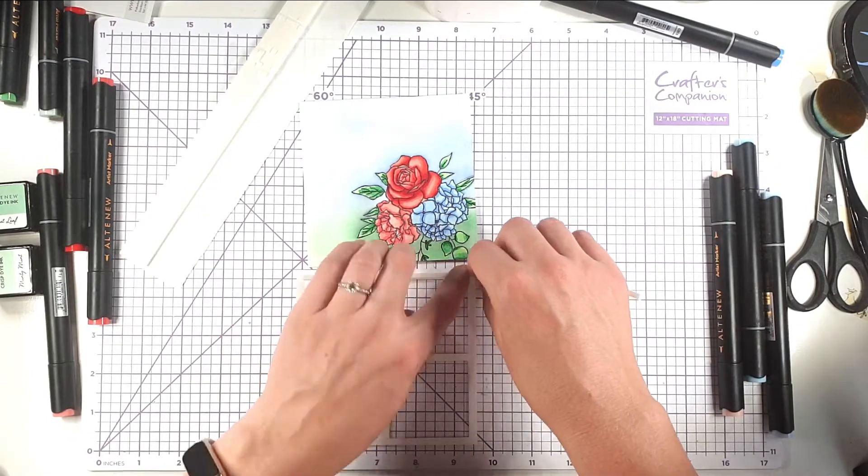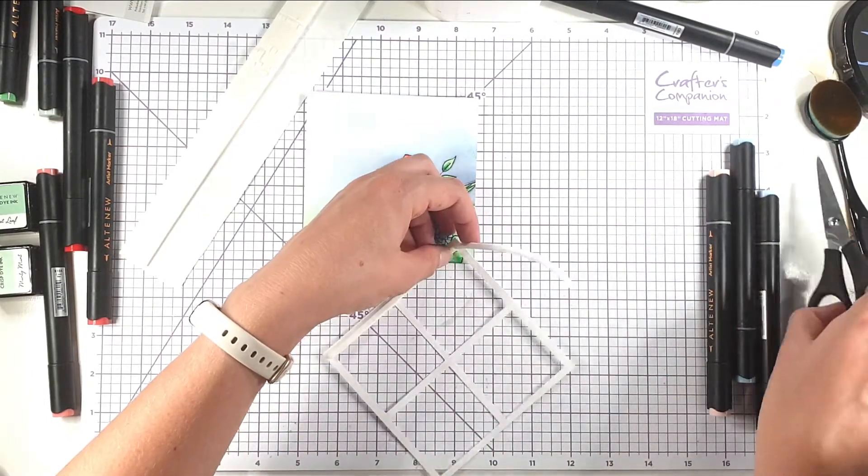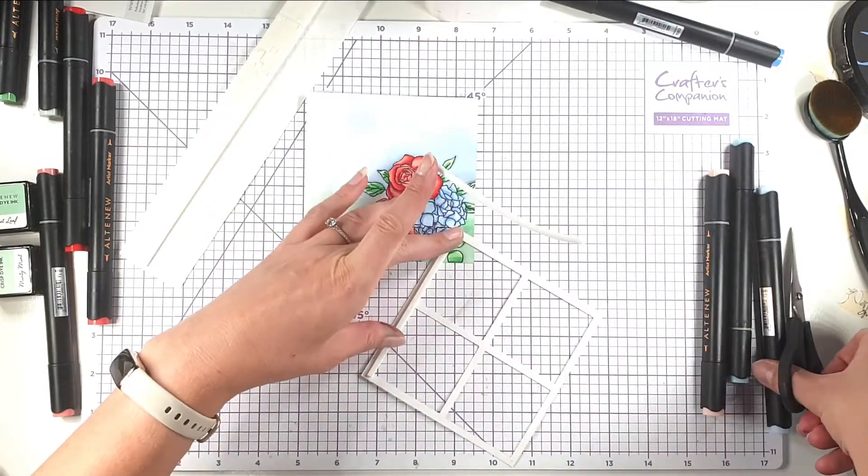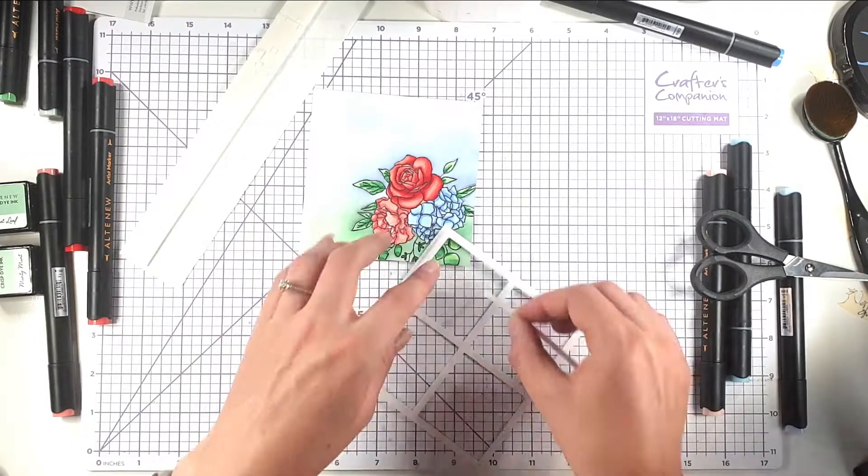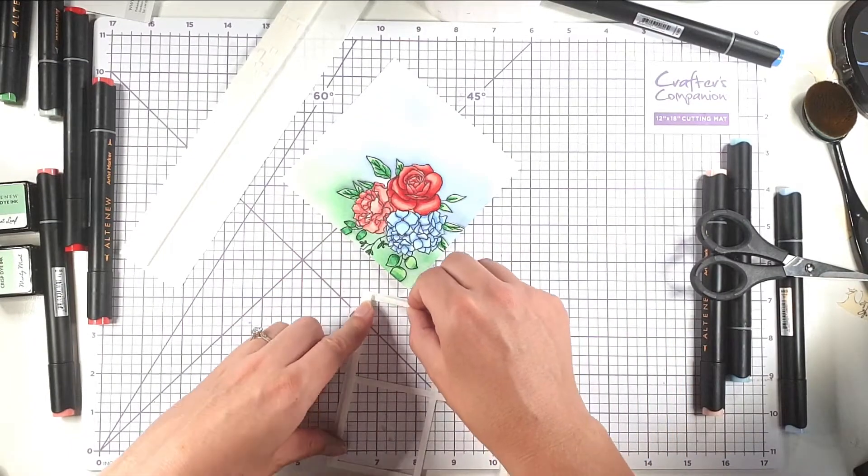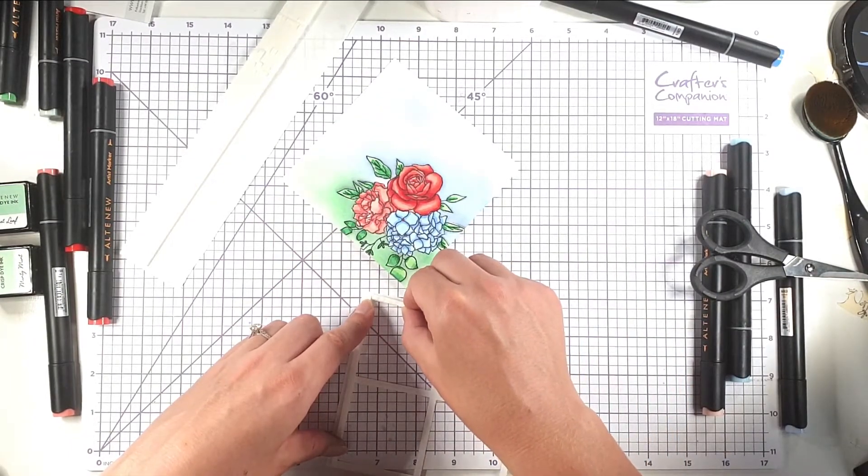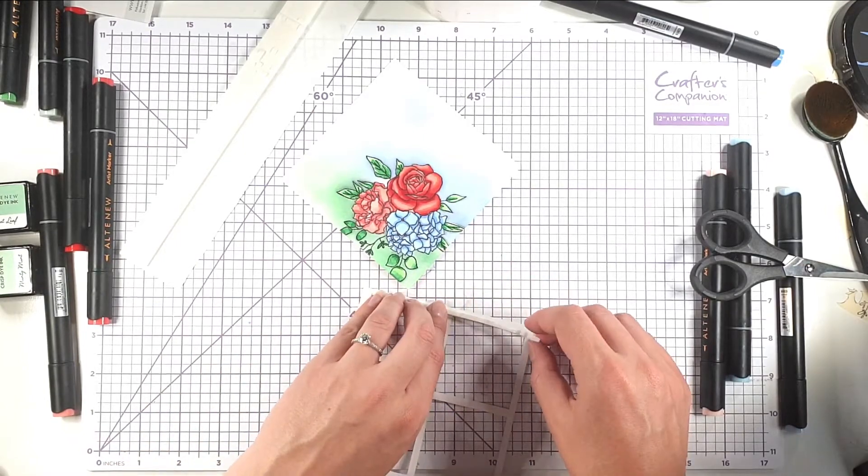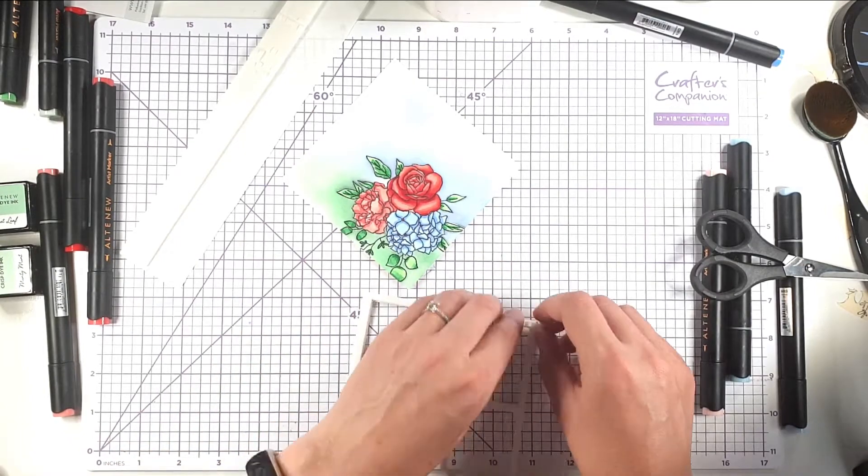And if at this point you wanted to make it look like a real window or if you wanted to make it into a shaker card, then just be sure to put some acetate on here first and then you've got that kind of shine for the window or something to hold all the bits in if you want to make a shaker card, but I'm not using it for that today.